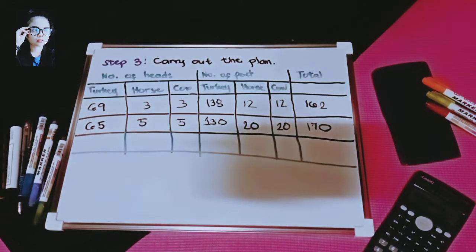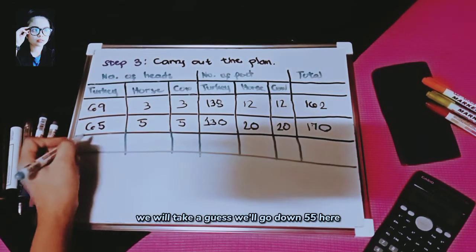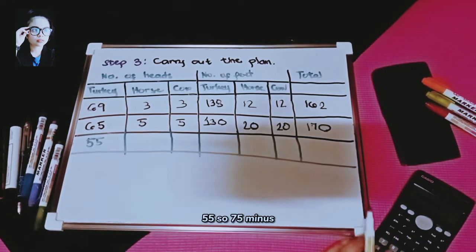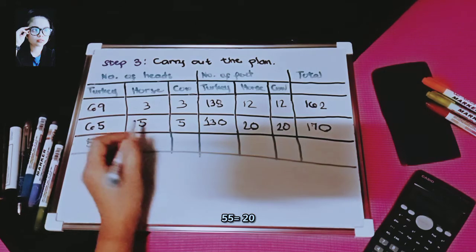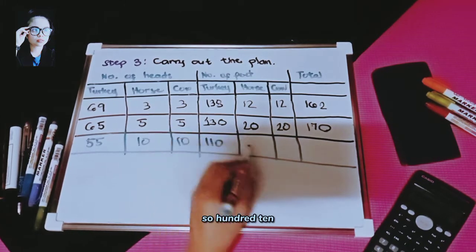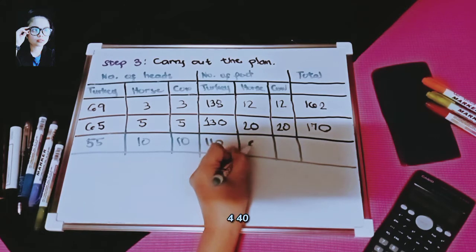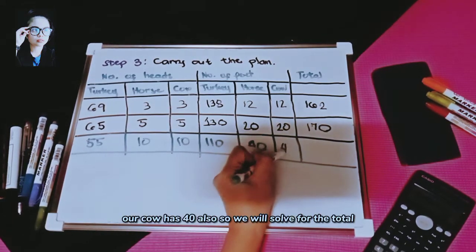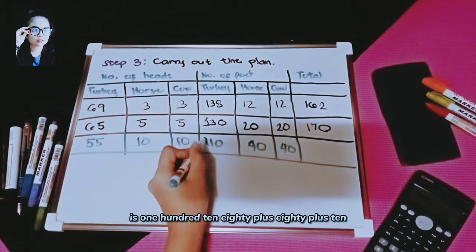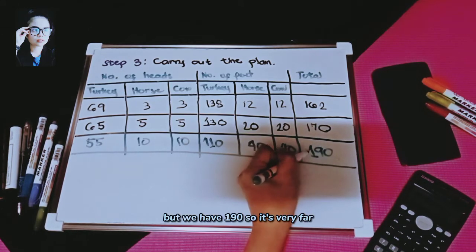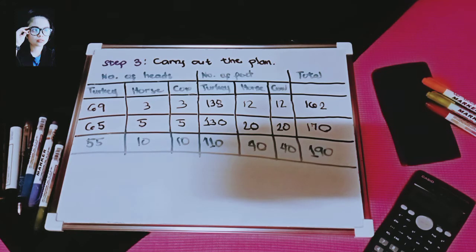Next guess is 55 turkeys. 75 minus 55 equals 20, divided by 2 equals 10 horses and 10 cows. Turkey feet: 55 times 2 equals 110. Horse feet: 10 times 4 equals 40. Cow feet: 10 times 4 equals 40. Total: 110 plus 40 plus 40 equals 190.